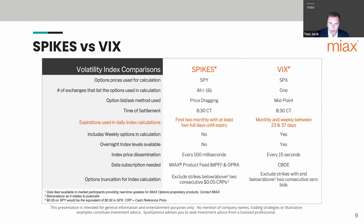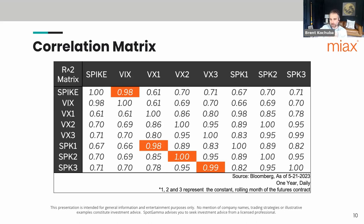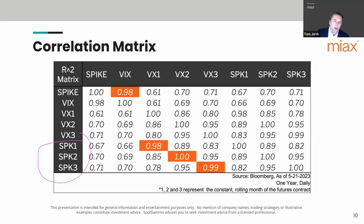Spikes uses SPY options and VIX uses SPX options to calculate the final settlement, and we do not include weekly options in the calculations. One of the items to highlight is the correlation — when talking about how Spikes moves relative to VIX, I like to look at the futures metrics more than the index itself, since the index isn't tradable. The futures here move pretty much in lockstep with one another.